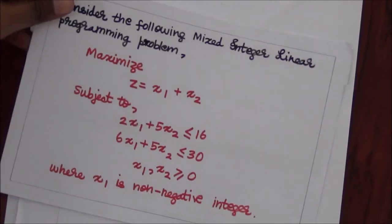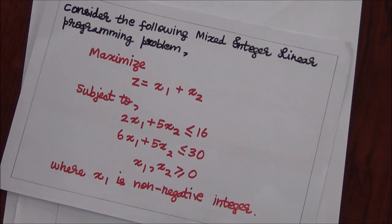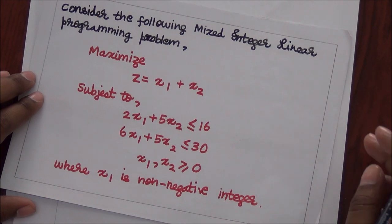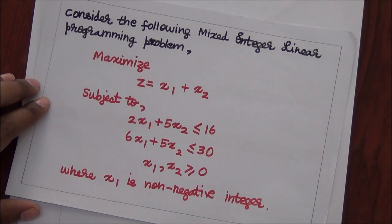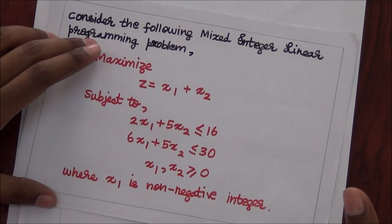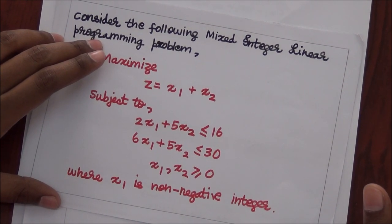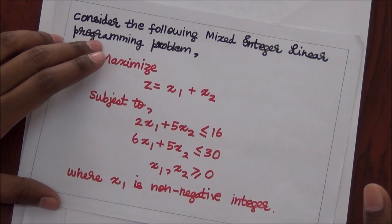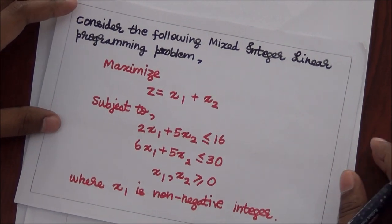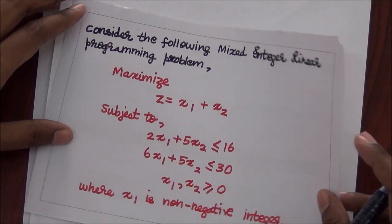We will first solve the following mixed integer linear programming problem. In order to solve the problem using Gomory's mixed cut, we will first obtain the solution of the problem by using the simplex method, find out the Gomory cut, introduce the Gomory cut in the problem, and iteratively solve it using the dual simplex method.